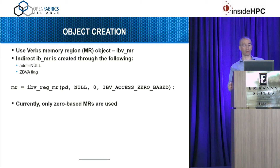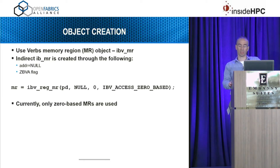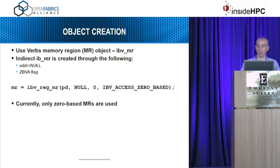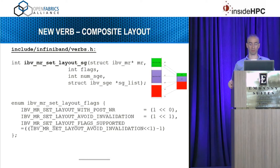We reuse the existing IBV MR with the same API, but in this case the MR points to what IBTA calls a ZBVA — zero-based virtual address — because the address now refers to the start of a virtual object. We're creating a virtually contiguous object, and the address describes the offset from the start of that object. We pass zero as the address because we don't yet have actual data pointed; we use it via the new verb IBV_MR_set_layout_scatter_gather for the composite type.